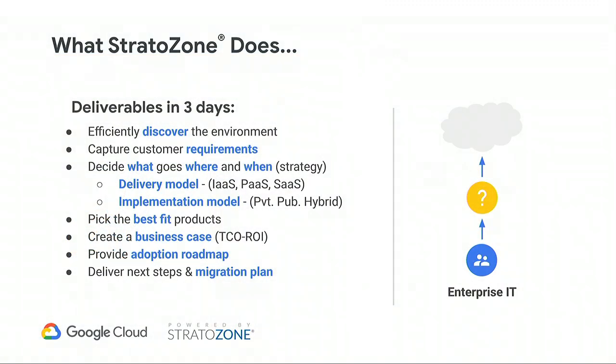Our entire goal is to help you accelerate that consumption cycle. Most importantly, what Stratazone does outside of risk mitigation is getting you to understand what goes where and when. Once you get that, you can put a roadmap together very easily. What we call a consumable roadmap has to be realistic and consumable — it's the biggest missing piece in most customers' cloud planning. The roadmap covers: what is the delivery model, what am I consuming with PaaS versus IaaS, what stays private, what can move to cloud — and the implementation model.